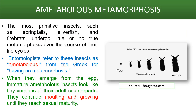Let us see what is ametabolous metamorphosis — that means there is no true metamorphosis. The most primitive insects such as springtails, silverfish, and firebrats undergo little or no true metamorphosis over the entire course of their life cycle. Entomologists refer to these insects as ametabolous or having no metamorphosis. When they emerge from the egg, immature insects look like tiny versions of their adult counterparts, and they continue molting and growing until they reach sexual maturity.